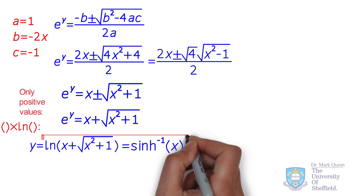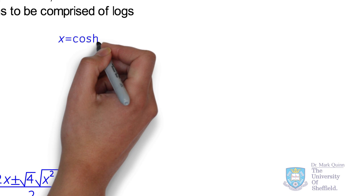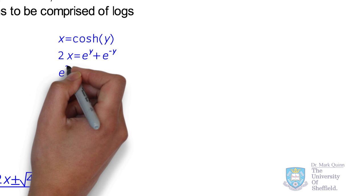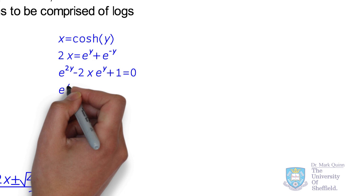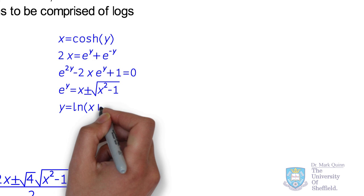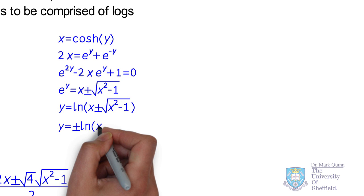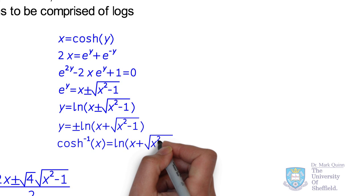Repeating this exercise for hyperbolic cosine: to determine the inverse hyperbolic cosine, we swap variables x and y, express the equation in terms of exponentials, and solve for y using natural log. The inverse hyperbolic cosine is ln(x plus root(x² minus 1)). These derivations provide useful practice manipulating exponential and logarithmic functions.